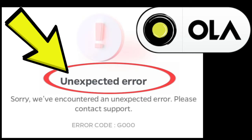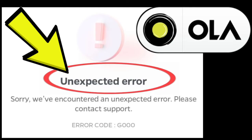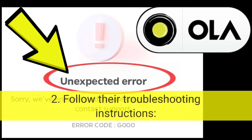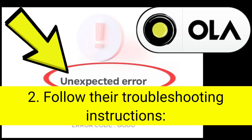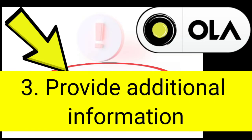Here's a summary of the steps to take. 1. Contact Ola customer support. 2. Provide them with the error code GEO and any relevant details about the issue, such as the time and context of the error. Follow their troubleshooting instructions — they may ask you to try specific actions such as restarting your phone, updating the app, or clearing its cache.